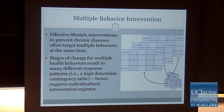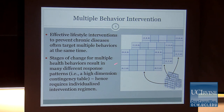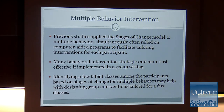Nowadays, effective lifestyle interventions to prevent chronic diseases usually target multiple health behaviors simultaneously. Looking at stages of change for multiple health behaviors results in many different response patterns, as illustrated by this graph. In order to tailor interventions for each stage-of-change pattern, it usually requires individualized intervention regimens. That is probably why most previous studies applying the stages of change model to multiple behaviors relied on computer-aided programs to facilitate tailoring interventions for each participant.